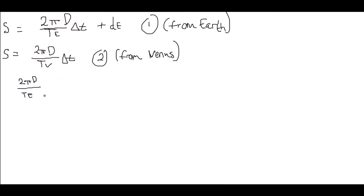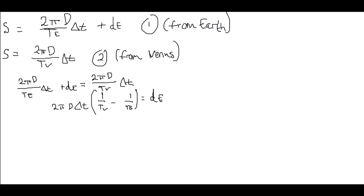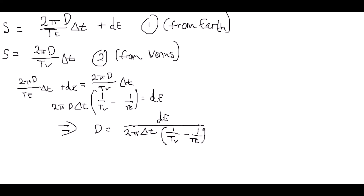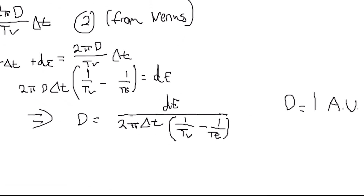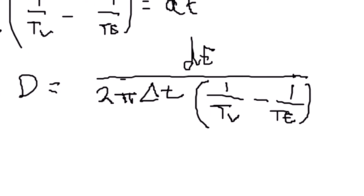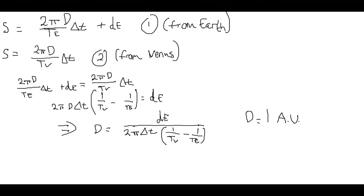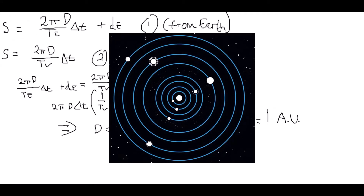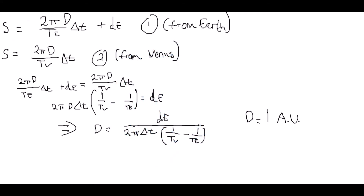Since now we have two equations of the same arc length, one can set them equal to each other and rearrange for an expression for big D in terms of anything else. Quickly doing that leaves us with big D equals dE divided by 2pi·delta T, times 1/TV minus 1/TE. Here D is the distance to the Sun, also known as the astronomical unit as mentioned previously. You may have noticed that Earth's diameter appears here but not Venus's. In reality this method does rely on the diameter of Venus, but considering how small it is when viewed from the Earth it can be seen as negligible, and so not included in the final expression. Some other approximations include assuming circular orbits with constant orbital speeds of Venus and Earth, as well as the physicist's favourite small angle approximation.